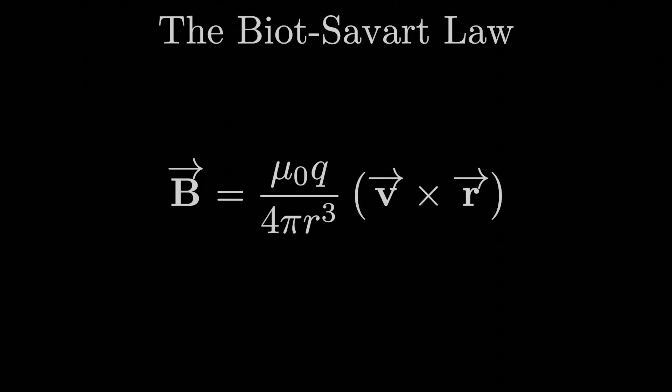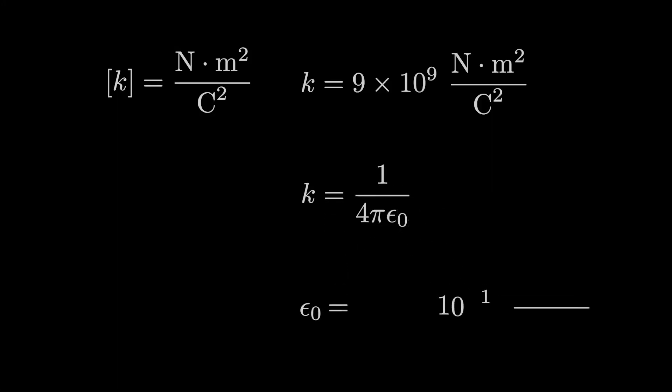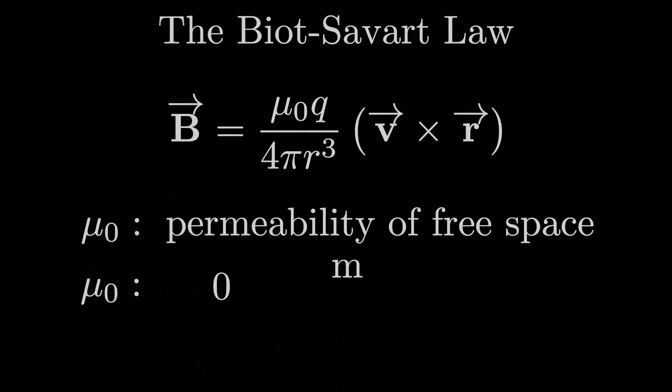Now, what is this mu naught here in the equation? Mu naught is a fundamental constant of nature called the permeability of free space, not to be confused with the permittivity of free space, which we called epsilon naught. Mu naught just has an exact value of 4 pi times 10 to the negative 7th tesla meter per ampere.